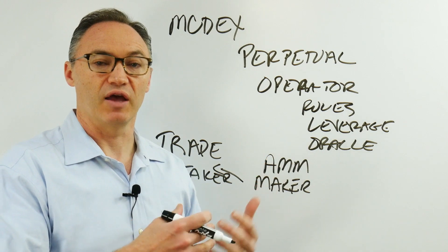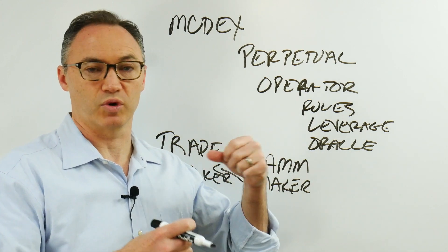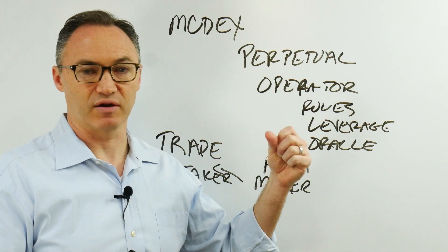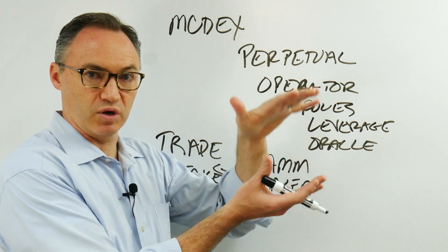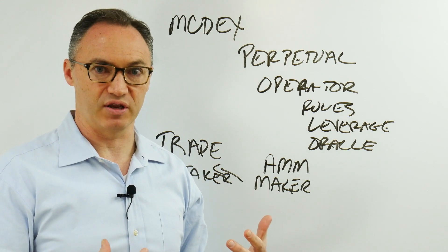You don't want longs that want to buy Bitcoin at $55,000 and shorts that want to short it at $60,000. You want to bring that together, and the way they do that usually with perpetuals is through a funding mechanism.